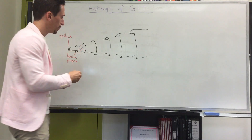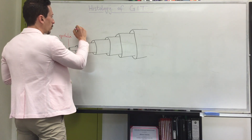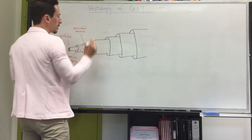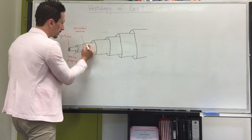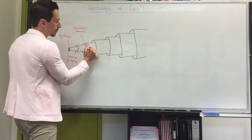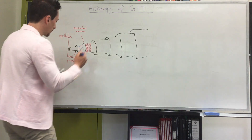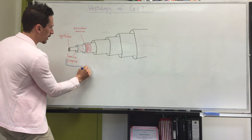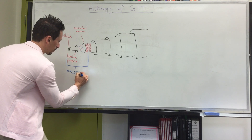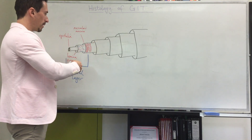The third layer is a very thin layer of smooth muscle which we call the muscularis mucosa. These three layers — the epithelia, the lamina propria, and the muscularis mucosa — together are called the mucosal layer.